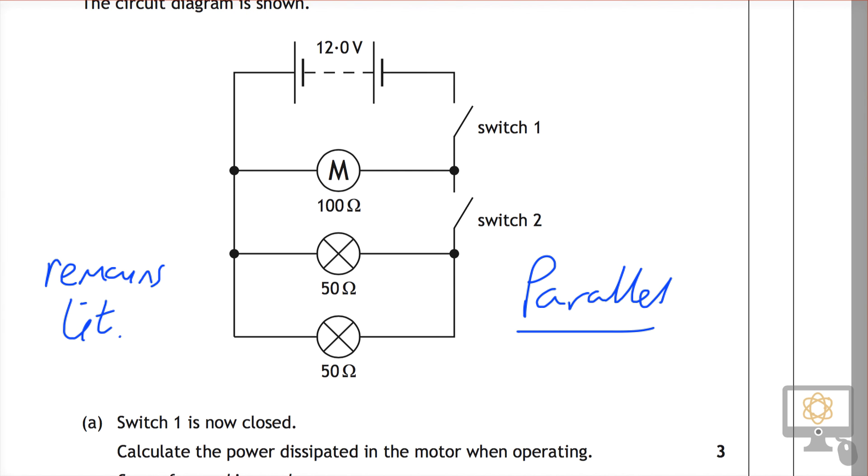Okay. And the rationale behind that, the justification, is that it is in parallel with the supply and the other resistor and bulb. Of course, bearing in mind, the other thing that's true is you will not get the mark for this unless you give a justification, even if that justification is correct.